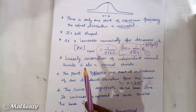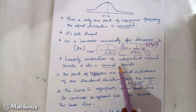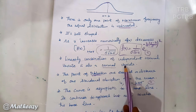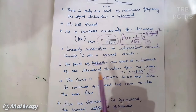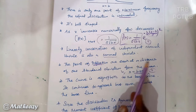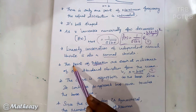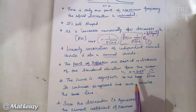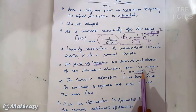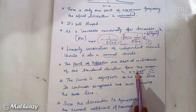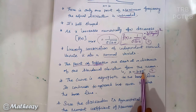The linear combination of independent normal variates is also a normal variate. The points of inflection are each at a distance of one standard deviation from the mean. So the points of inflection are at x = mu ± sigma.